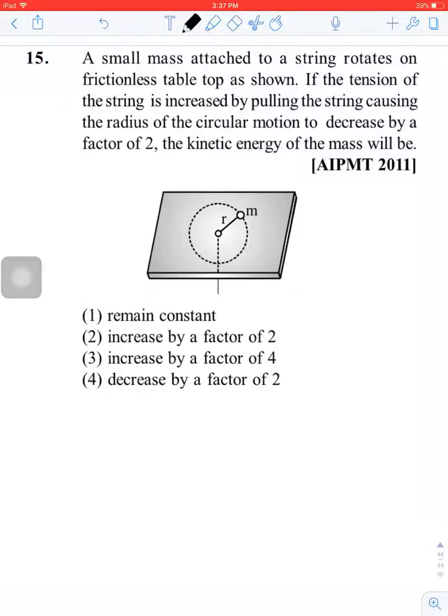A small mass attached to a string rotates on a frictionless table top. If the tension of the string is increased by pulling the string, causing the radius of the circular motion to decrease by a factor of two, what happens to the kinetic energy of the mass?